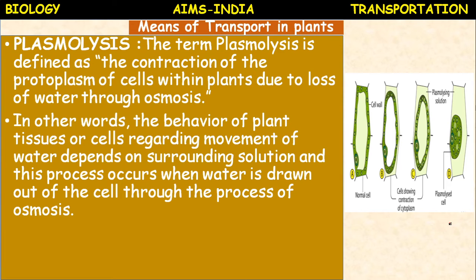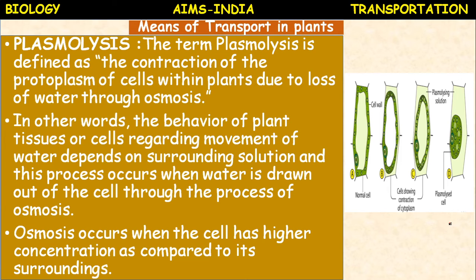The behavior of plant tissues or cells regarding movement of water depends on the surrounding solution. This process occurs when water is drawn out of the cell through osmosis - exosmosis. All water will be lost from the cell when the condition is hypertonic - meaning concentration is more inside the cell compared to the external environment. Osmosis occurs when the cell has higher concentration compared to its surrounding. In plasmolysis, the loss of water takes place and the content of the cell is reduced.